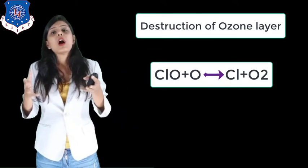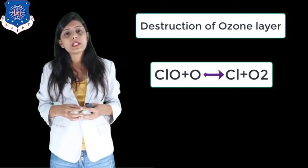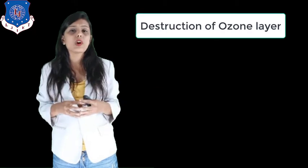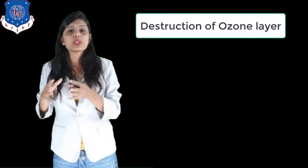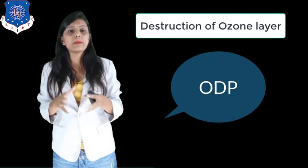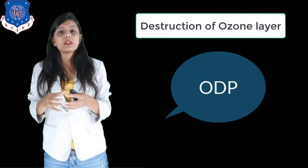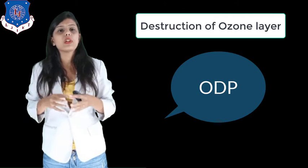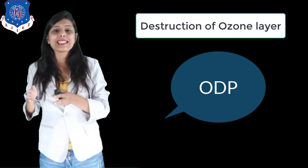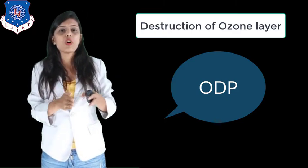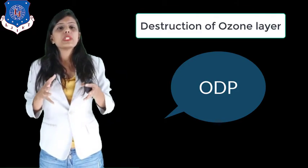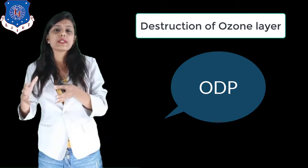How can we calculate the rate at which the ozone layer is depleting? There is a term for measuring the depletion rate of ozone which is known as ozone layer depletion potential (ODP). It is the ratio of the impact on ozone caused by a chemical compared to the impact of a similar mass of CFC-11.